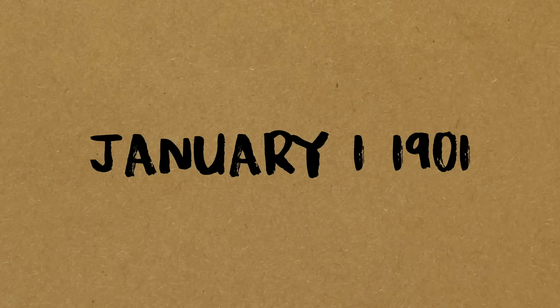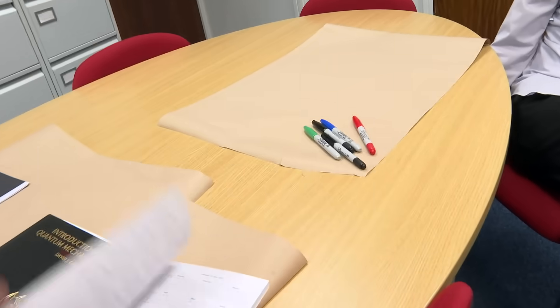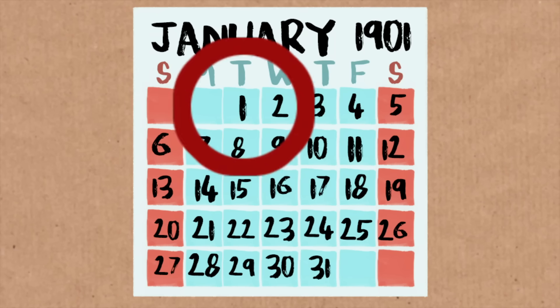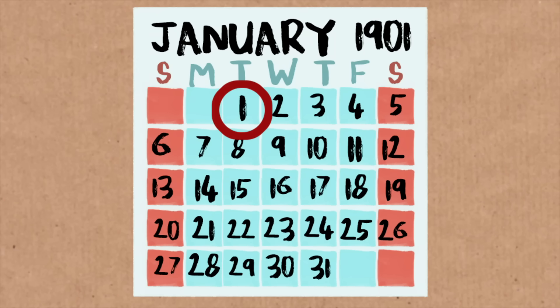Now you could test me again to prove that I really know what I'm doing. January 1, 1901. So the year 1901, and you're saying January 1... Is it a Tuesday? Tuesday. Wow!